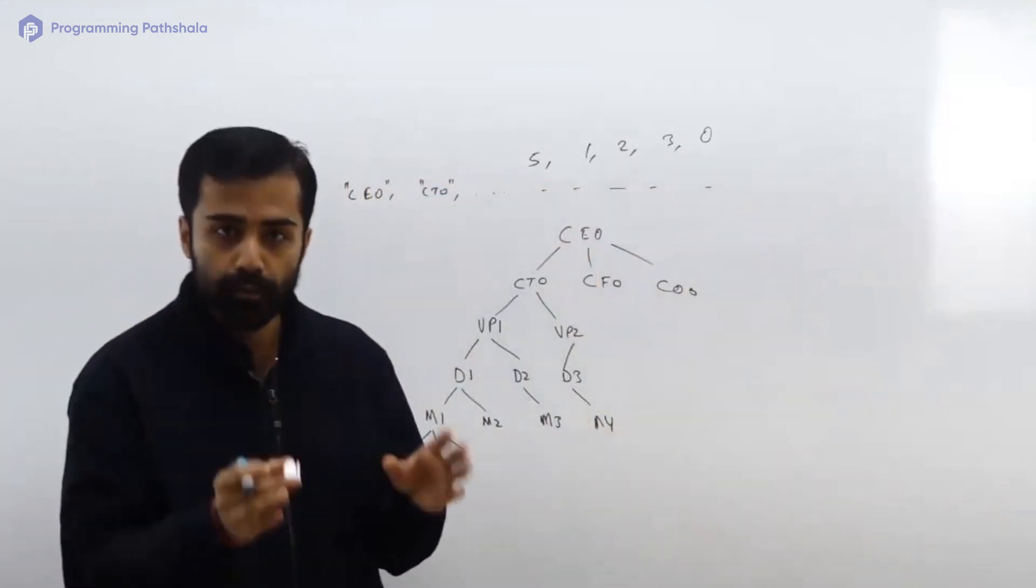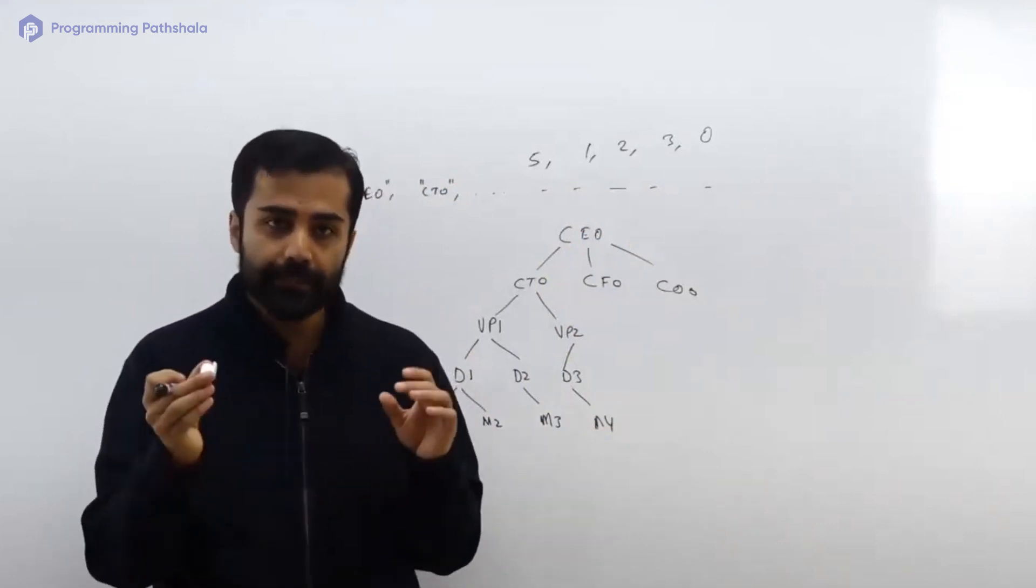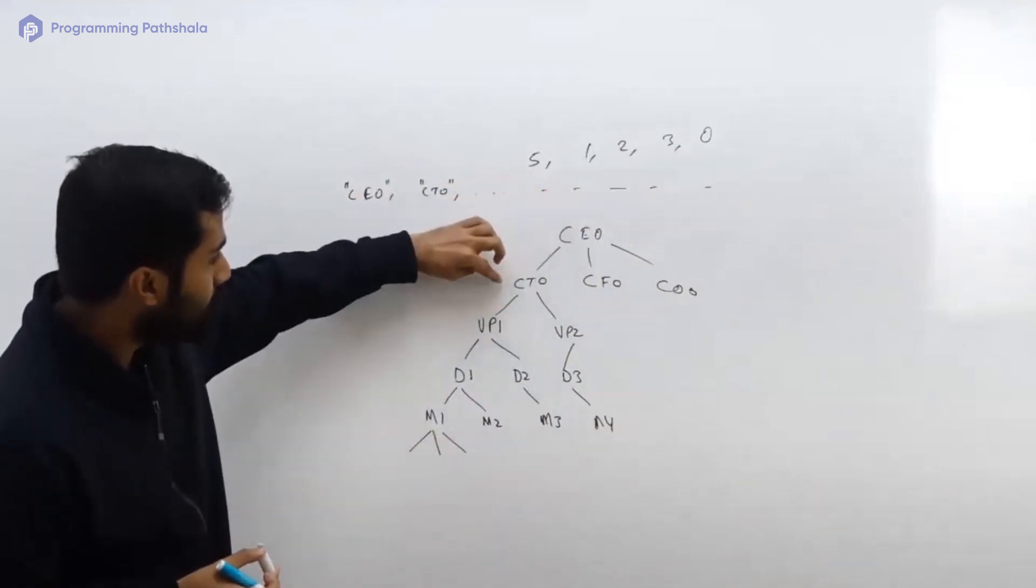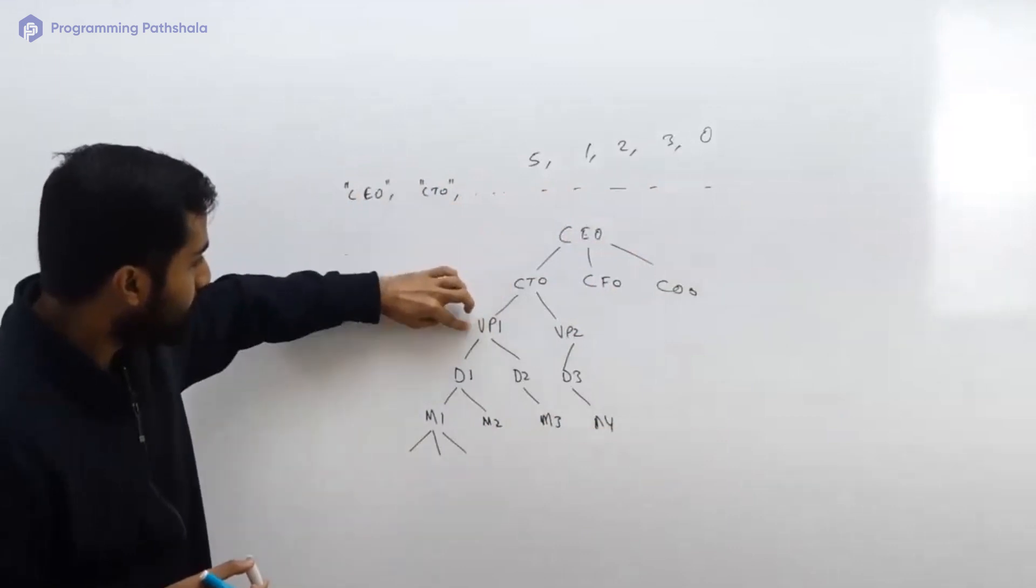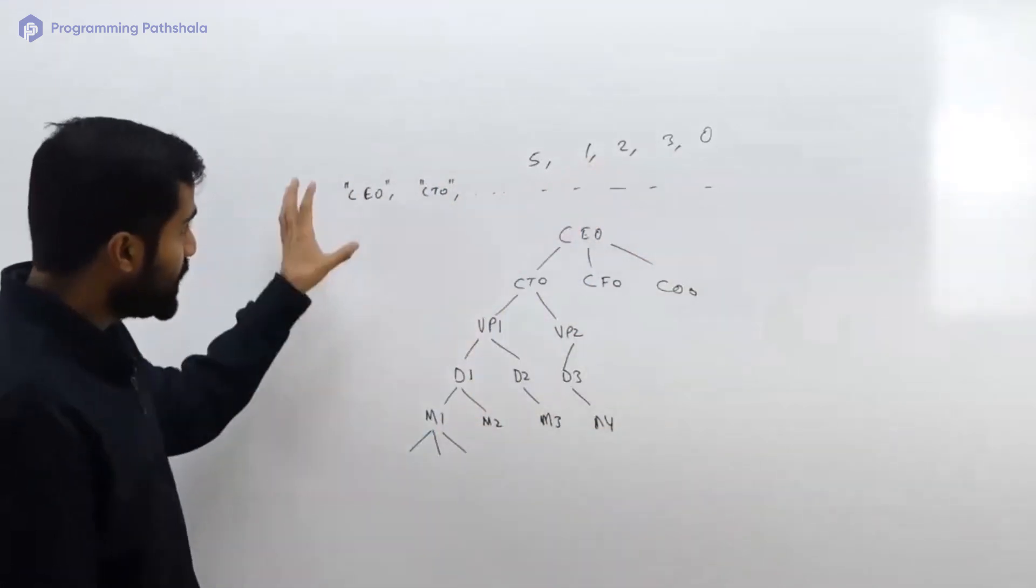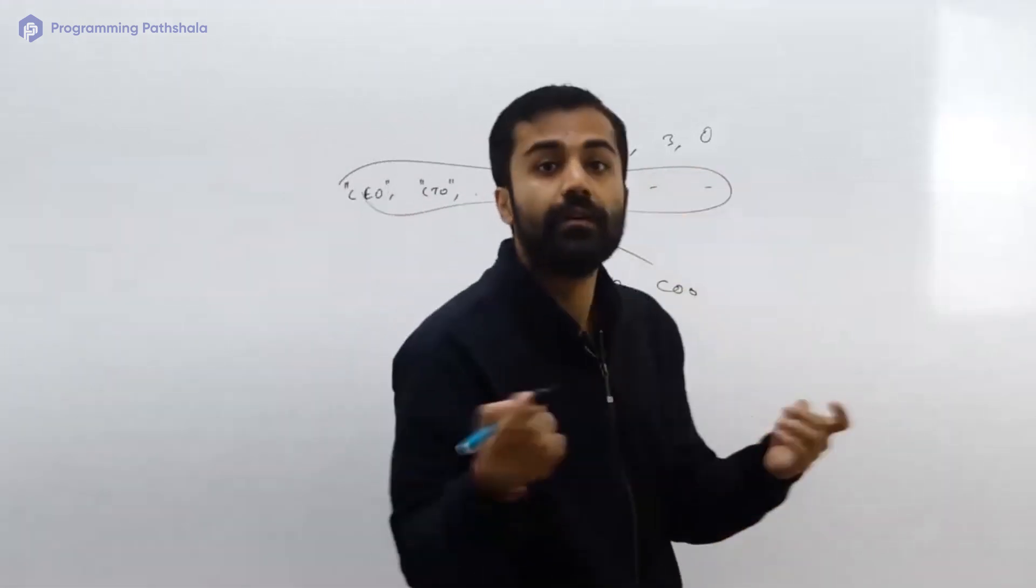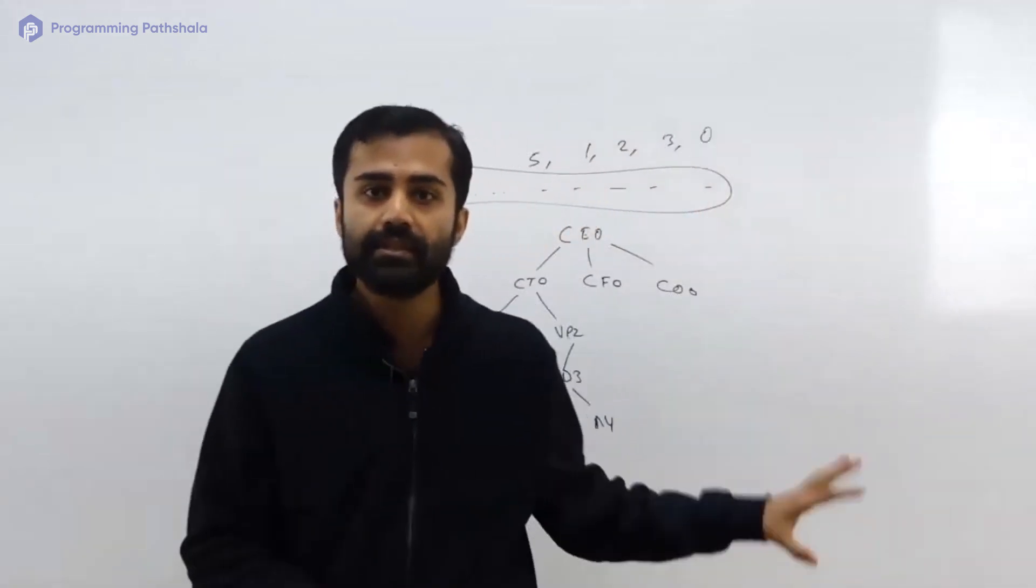What I mean by parent-child relationship is here you can say that hey, CEO is the parent of CTO, CFO, and COO. CTO is the parent of VP1, VP2. So if you're just storing it in an array, you will not be able to make out that who was the parent of which all things. So it is important to store such kind of data in a different kind of structure.